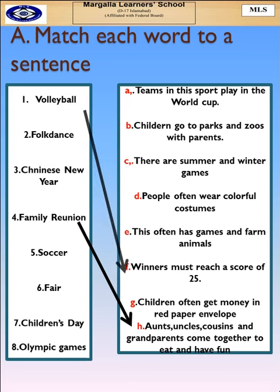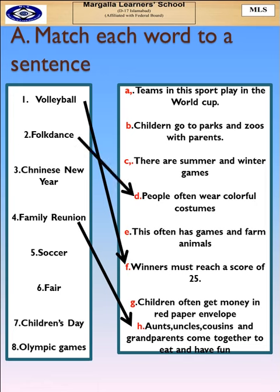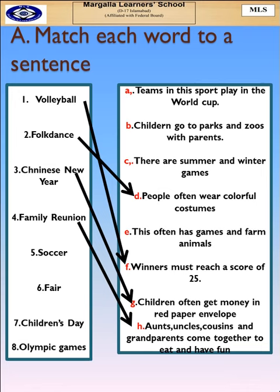Volleyball — winners must reach a score of 25. Folk dance — people often wear colorful costumes. Chinese New Year — children often get money in red paper envelopes. Family reunion — aunts, uncles, cousins and grandparents come together to eat and have fun.